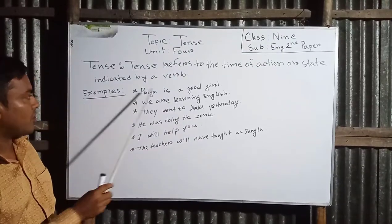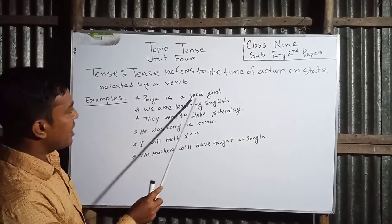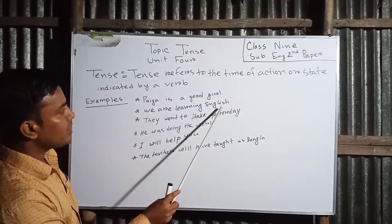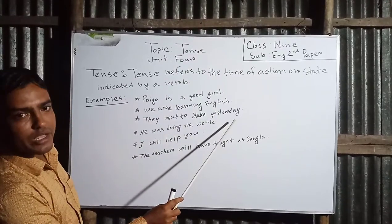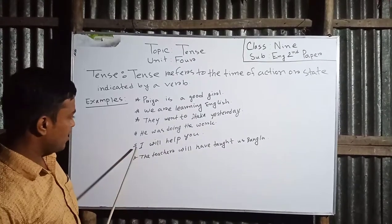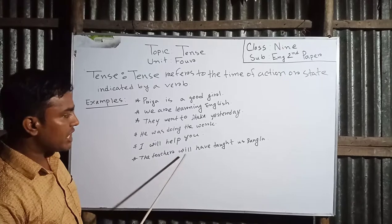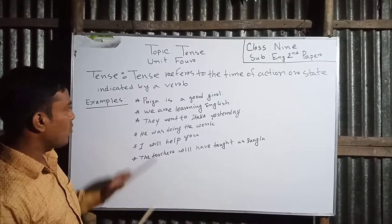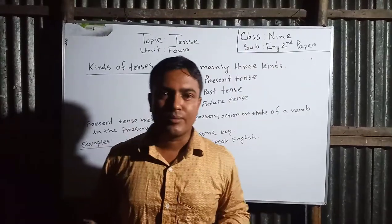Dear students, let's see some examples of different tenses. First: Priya is a good girl. We are learning English. They went to Dhaka yesterday. He was doing the art. I will help you. The teacher will have taught us Bangla. These are examples of different tenses.